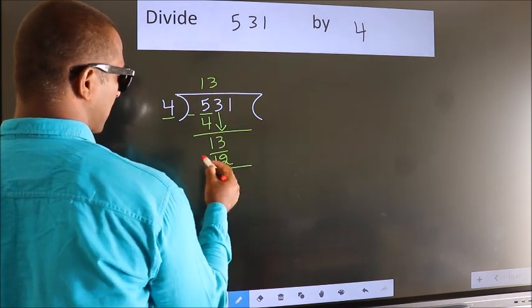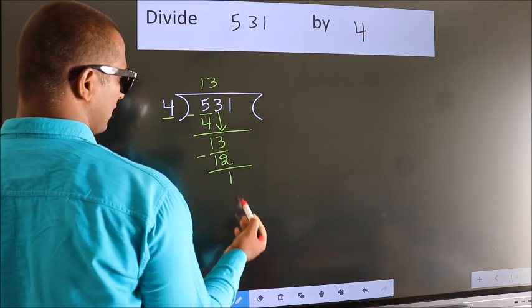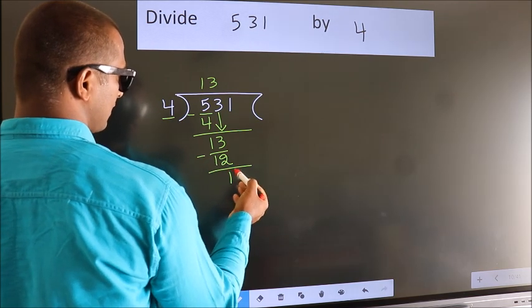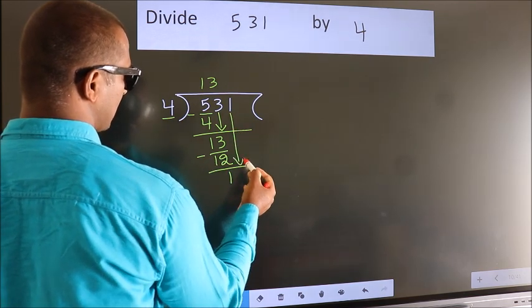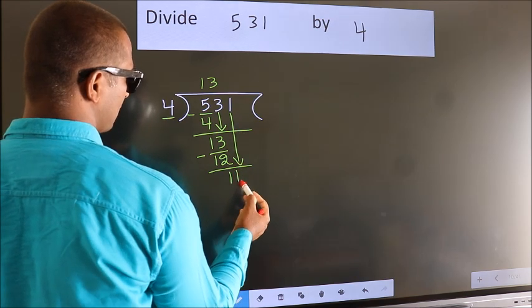Now, we subtract. We get 1. After this, bring down the beside number. So, 1 down. So, 11.